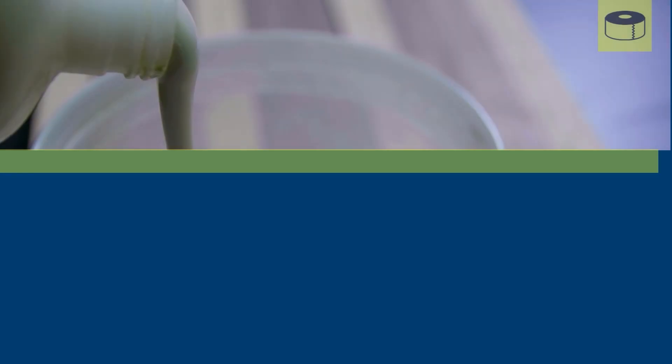Glue is an adhesive that historically created relatively weak bonds, but recent innovations including self-curing adhesives have made glue a preferred material for many applications. Glues can effectively bond metal to dissimilar materials. Application can be tricky and expensive machinery is often preferred. It's good to keep in mind that your bond can fail under prolonged heat or weathering.